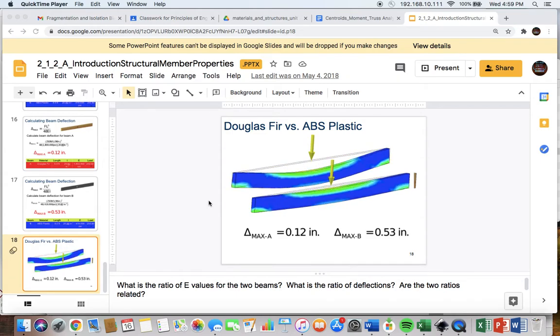Today we're going to describe and calculate the bending of a beam based on the modulus of elasticity. Modulus of elasticity is a way to describe the resistance to deformation, in this case of a beam, in regards to its material.